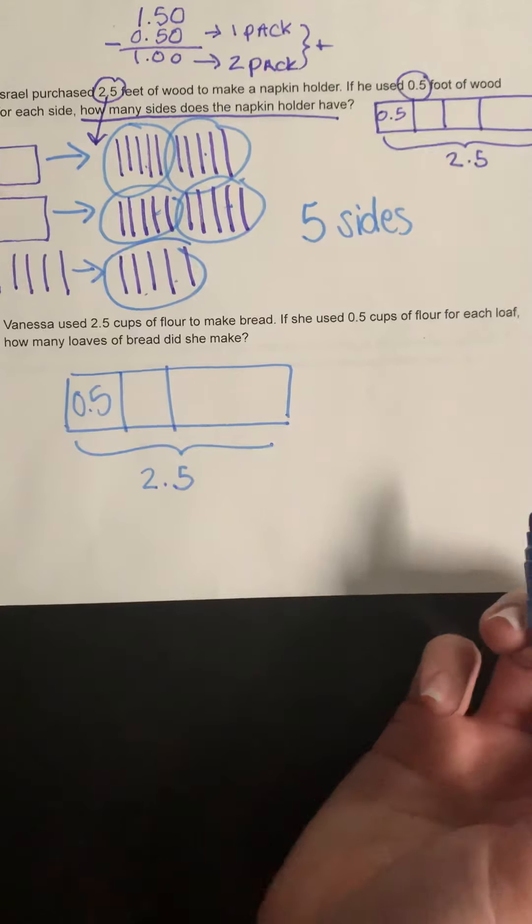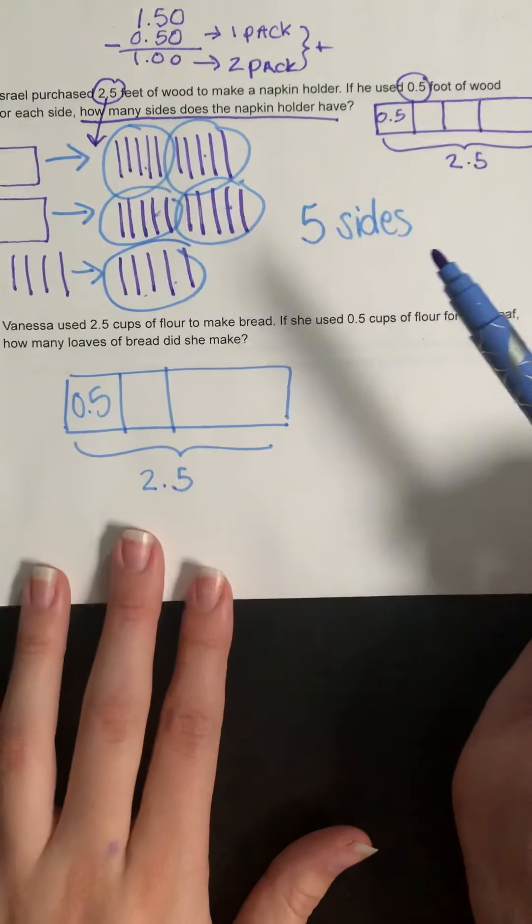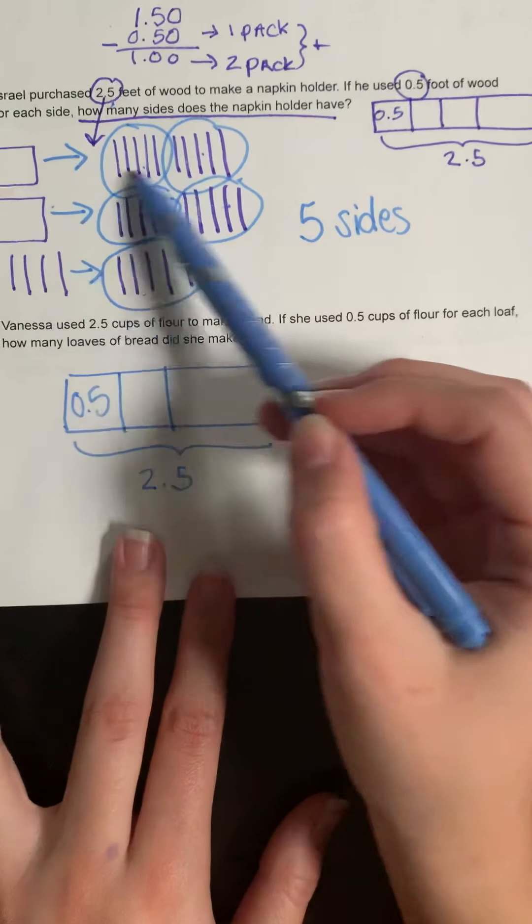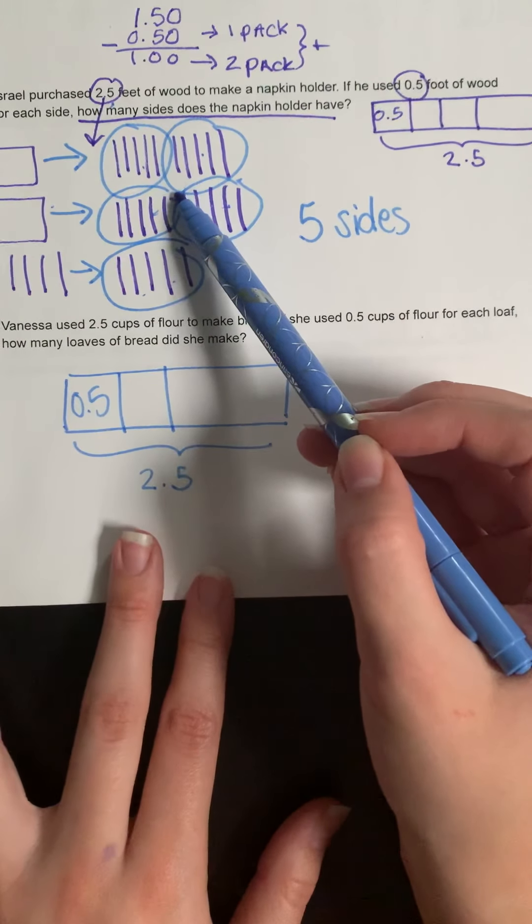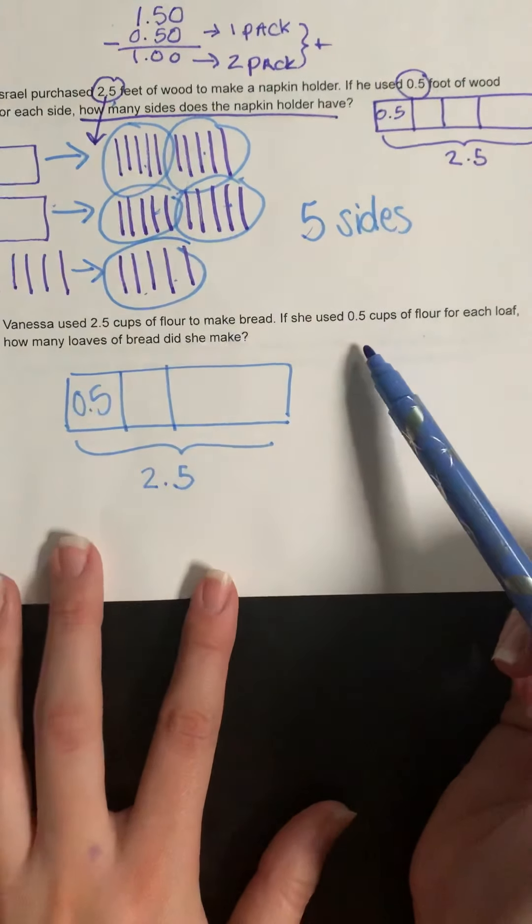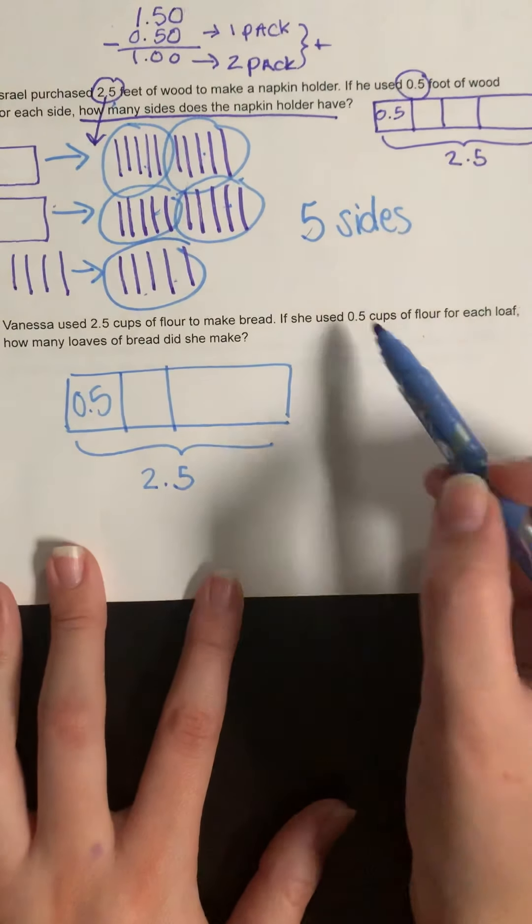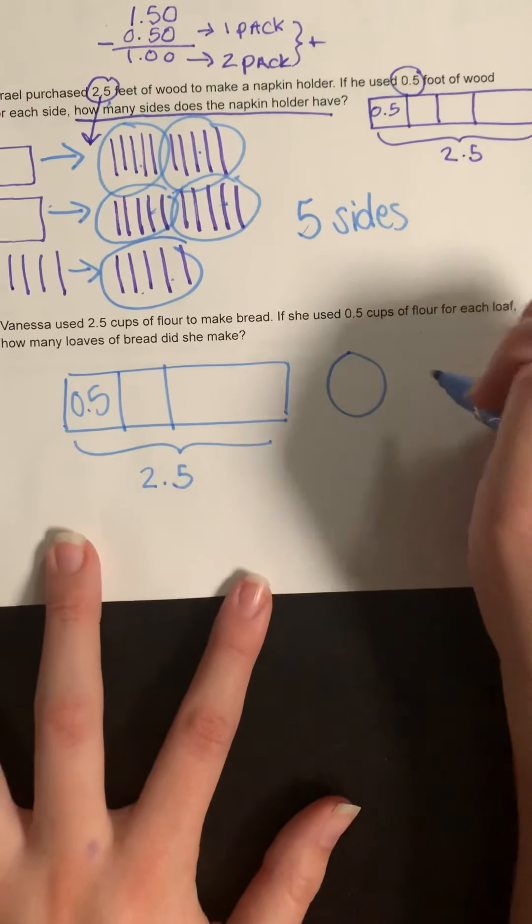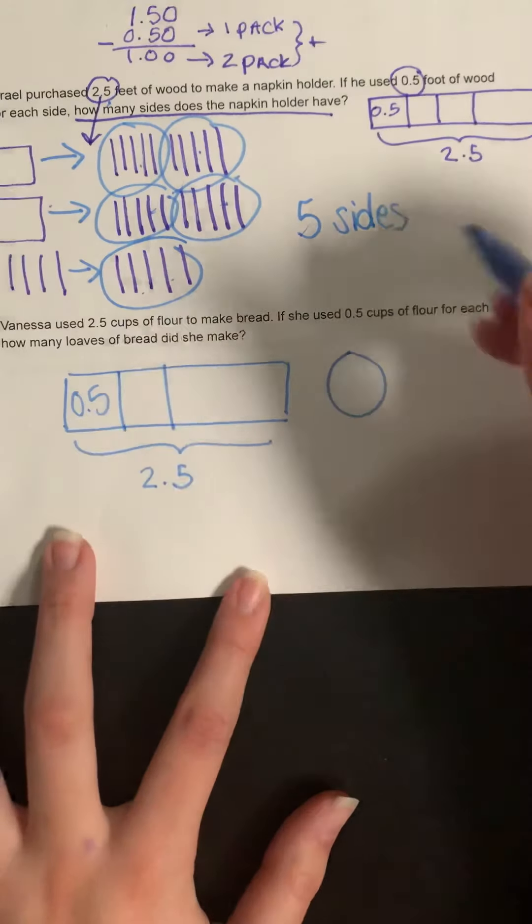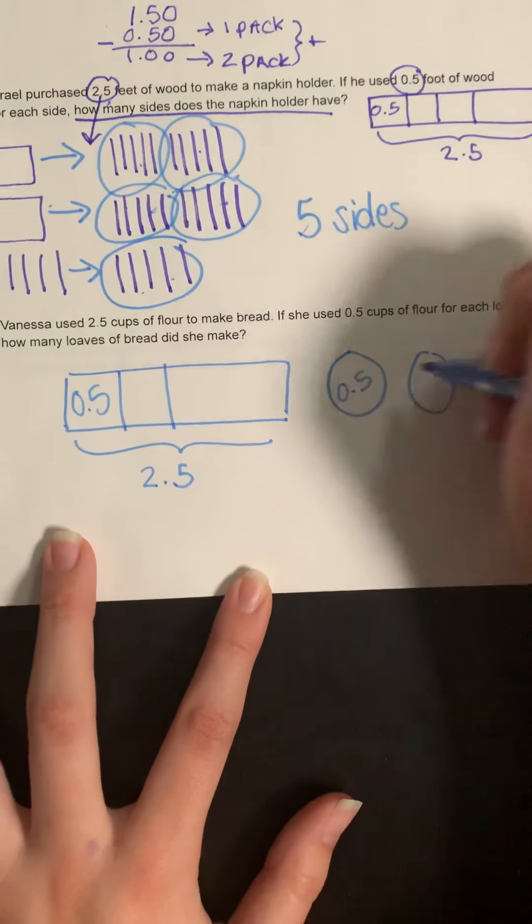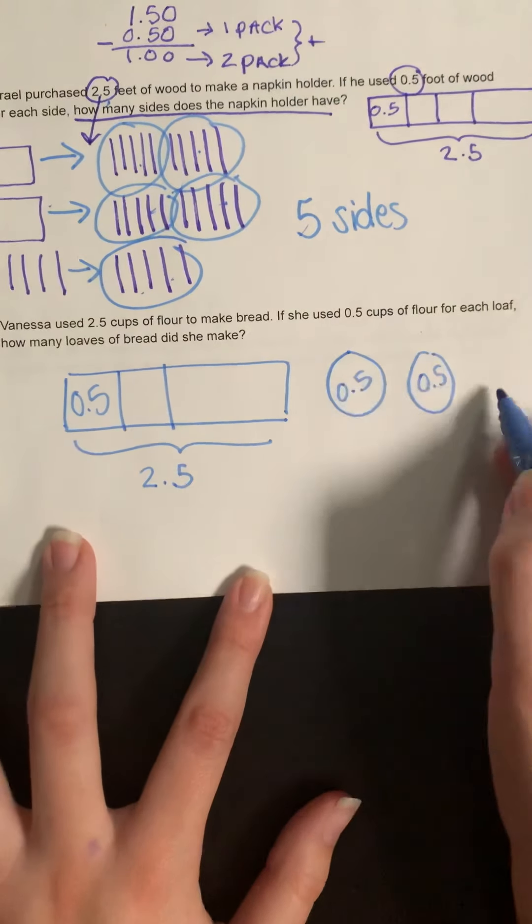So last time we did our 2.5, we drew the models, we decomposed them, and then we grouped them. This time we can kind of work backwards and we can say here's my 0.5 cups, here's another - that would be 1 whole, because 0.5 and 0.5 is 1 whole.